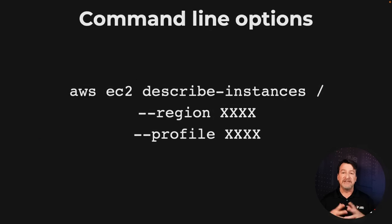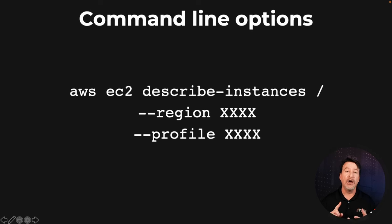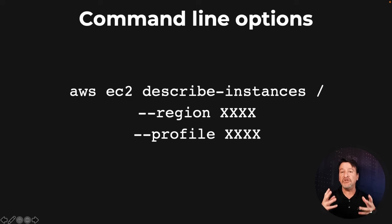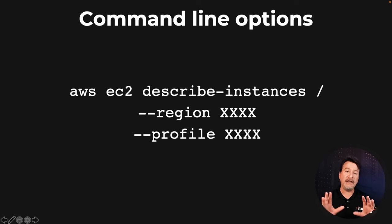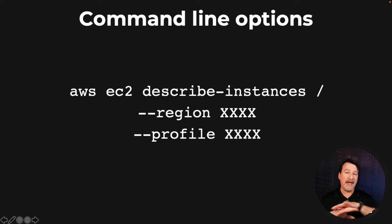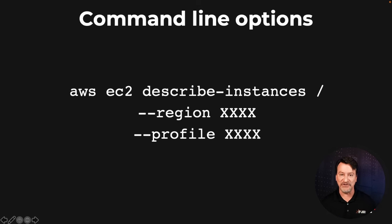On the command line options, you can put in a region override, a profile override so you don't get the defaults. Just know from the command line options point of view, it takes precedence over everything. If you set region here, it doesn't matter what you have for environmental variables or AWS configure — it's going to win the fight.